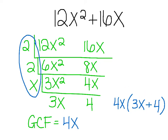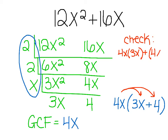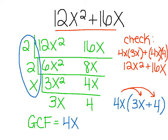To check our answer — you don't have to do this every time, but it's great practice — we do the actual distributive property: 4x times 3x plus 4x times 4. That gives 12x² plus 16x, which matches our original expression. So we did it correctly. Our final answer when asked to factor using the distributive property is 4x(3x + 4).